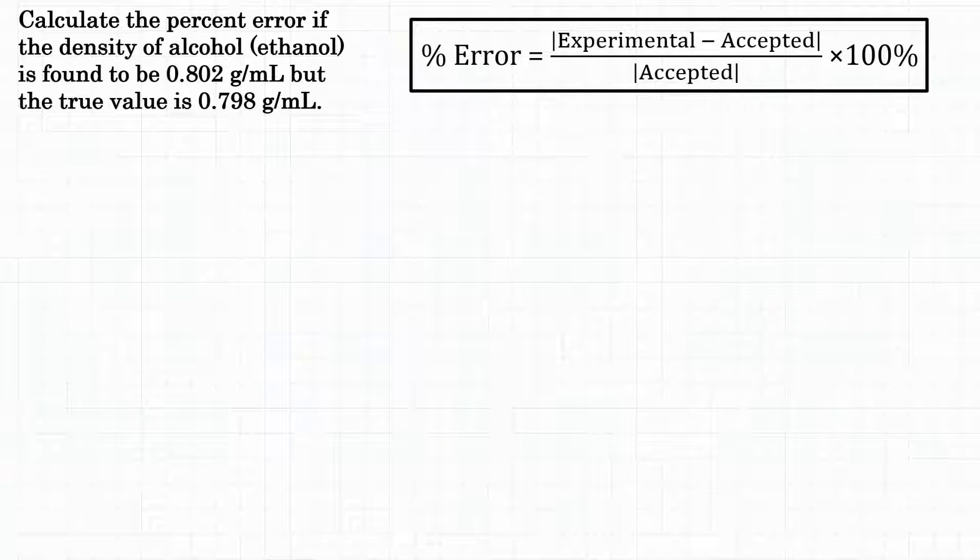So in this problem we're going to be calculating percent error and we were given two values. We were given 0.802 grams per milliliter and that is what we found. That's what we actually got in lab or real life.